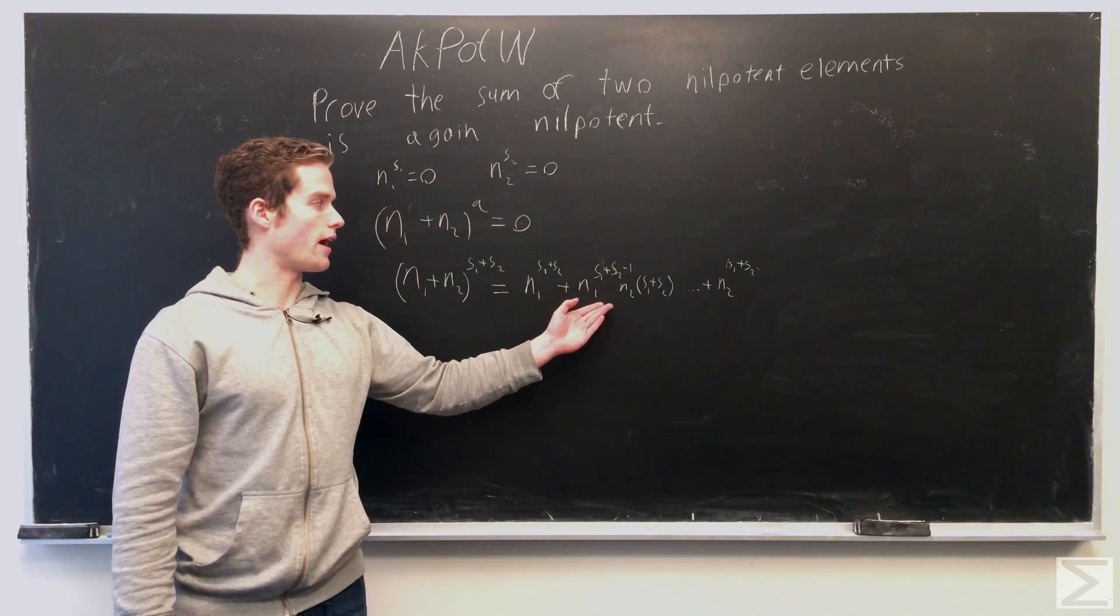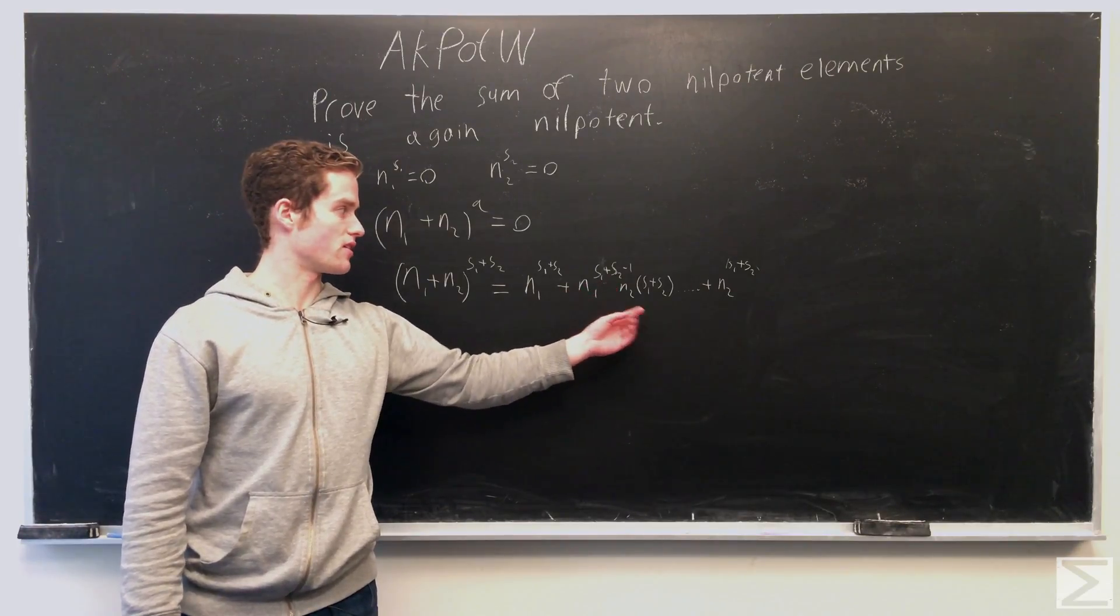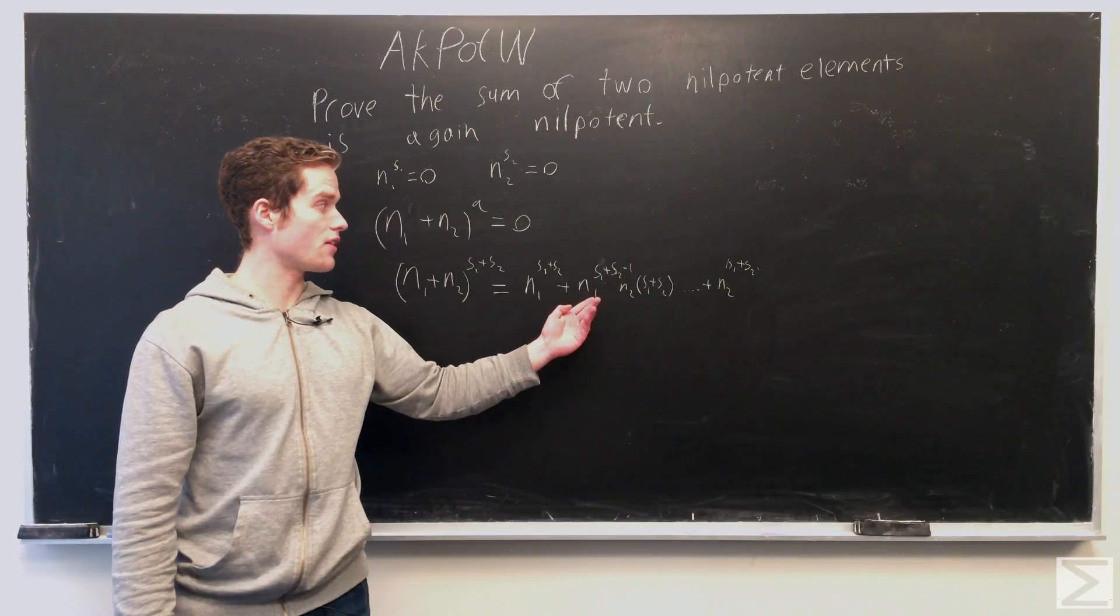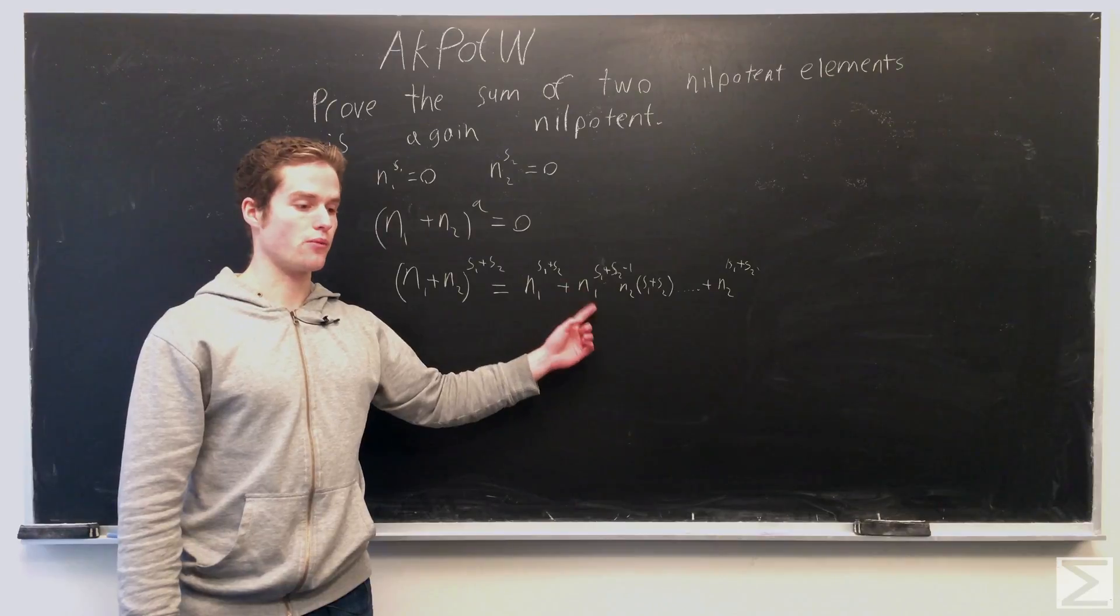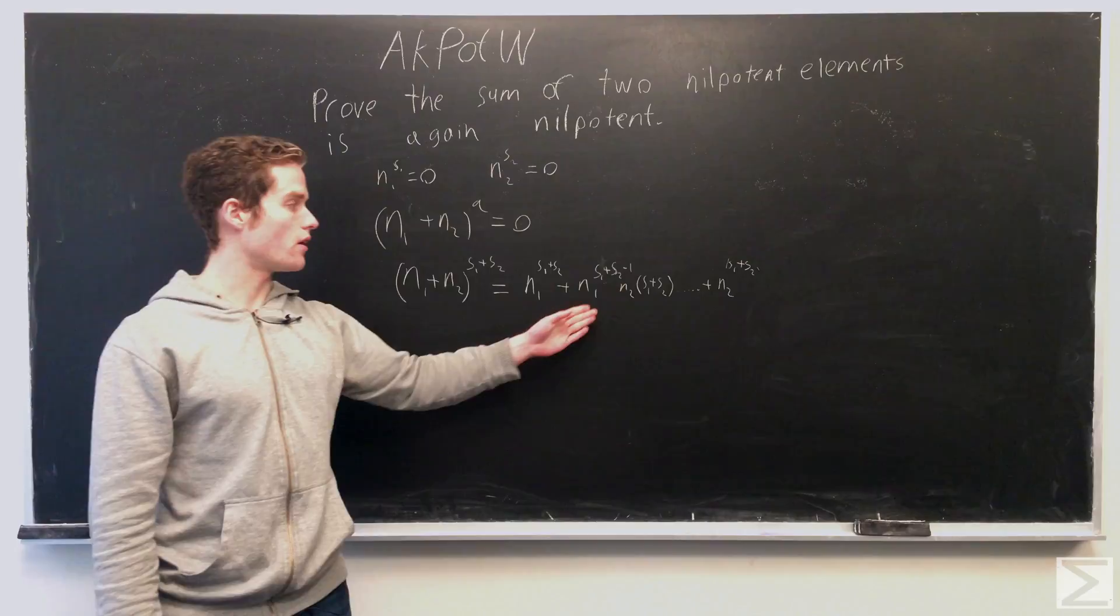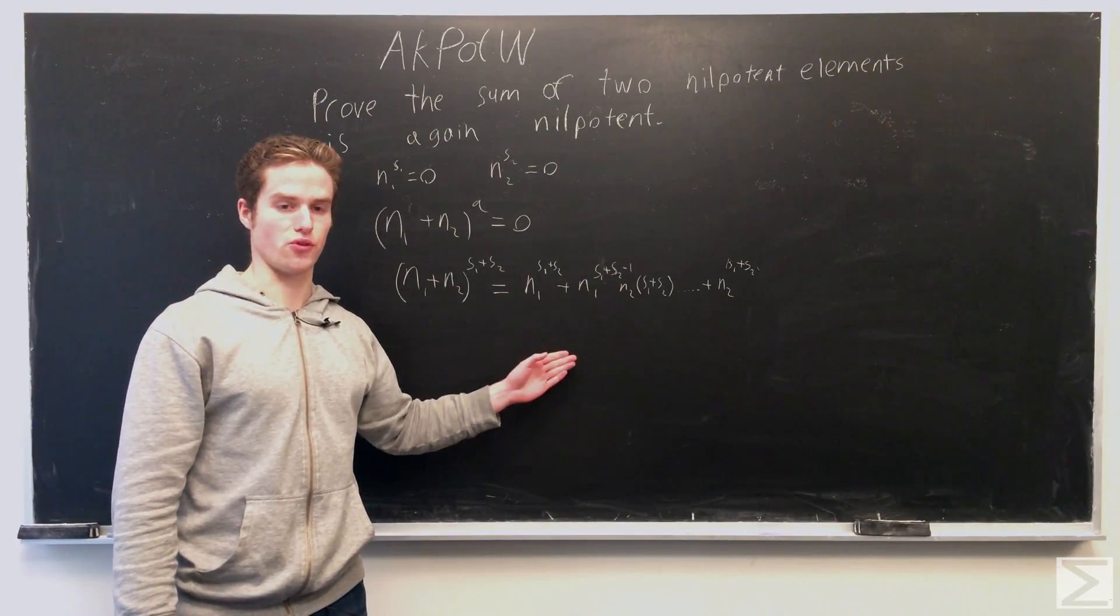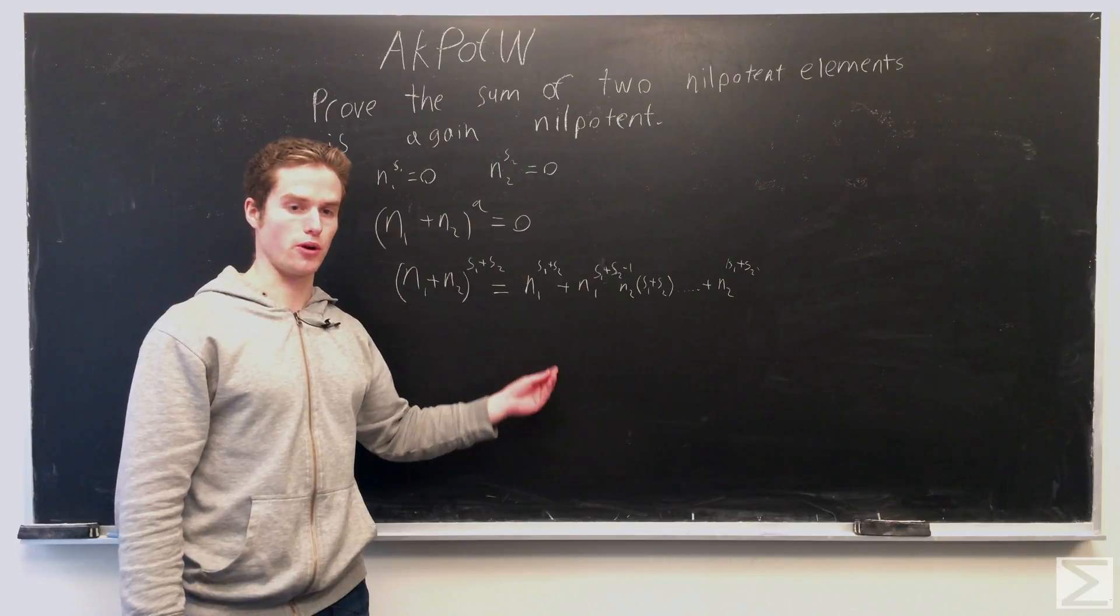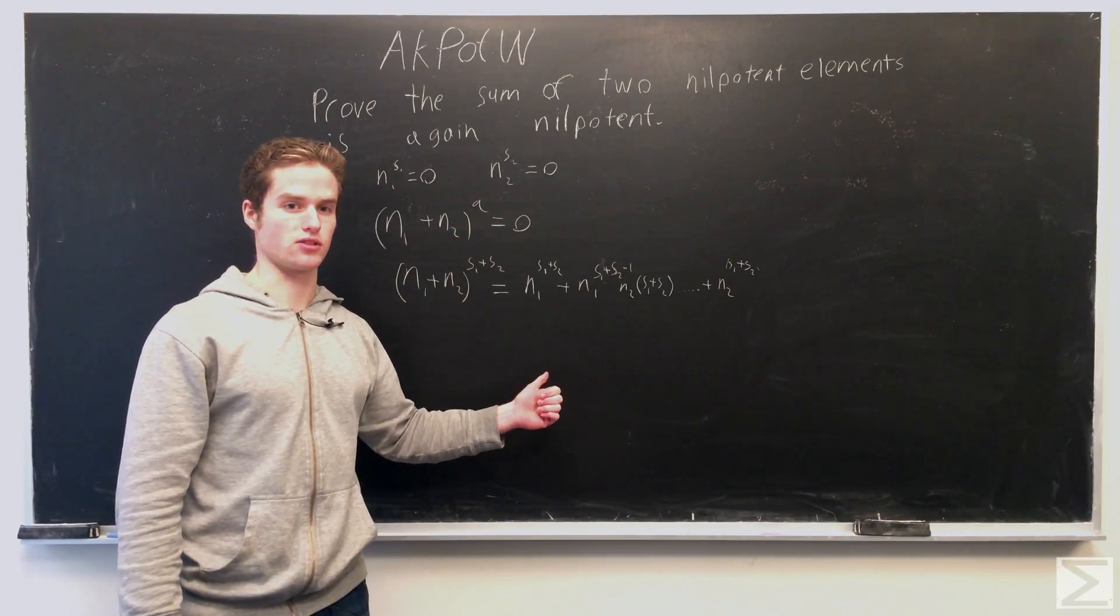And the one thing we need to know here is that either the power of n1 plus the power of n2 equals s1 plus s2. So at least one of n1 or n2 has to have a power greater than s1 or s2, because if they were both lower, we would get a sum lower than s1 and s2, giving us a contradiction.